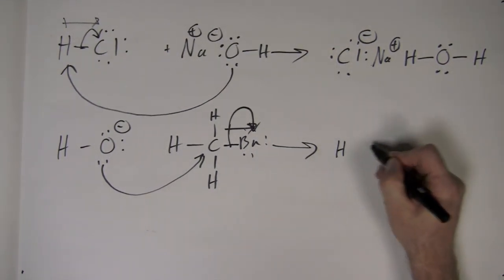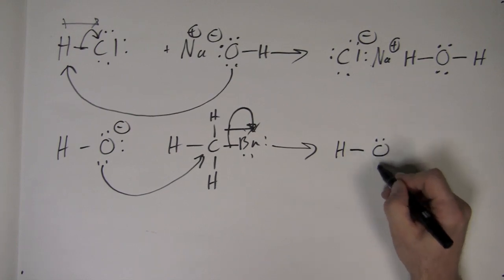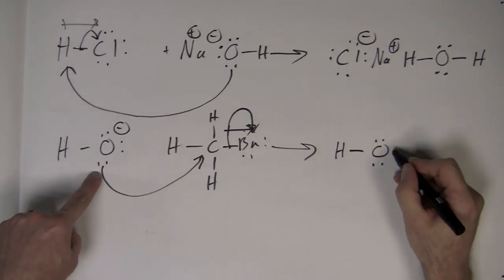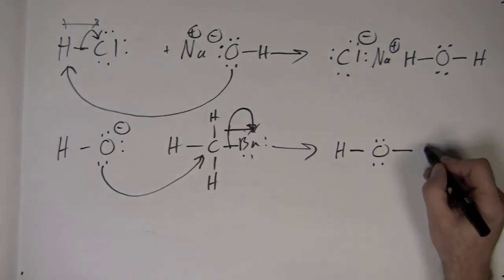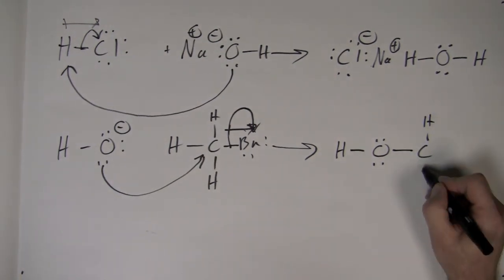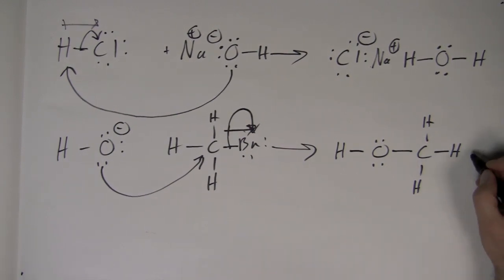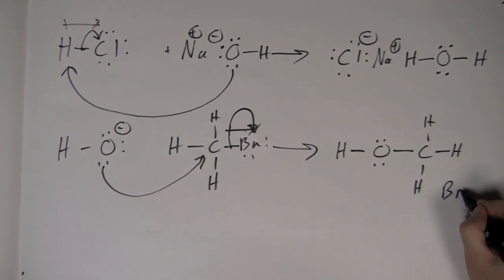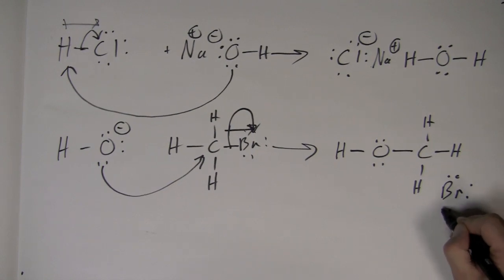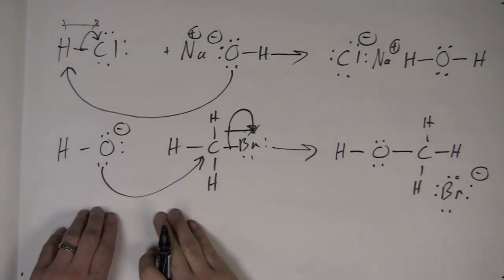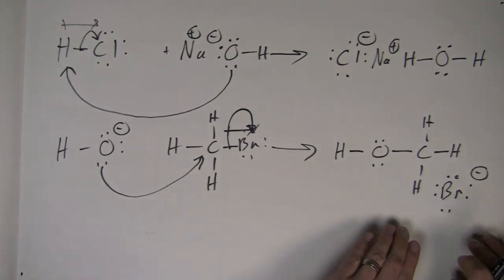Again, when we rewrite the product, we simply show the electrons that have moved. We show that a pair of electrons has now formed a new bond with the carbon atom and the bromine atom has moved off. Three lone pair that were there are still there. The new lone pair, and we include formal charges. Again, total electrons on the left equals the total electrons on the right.